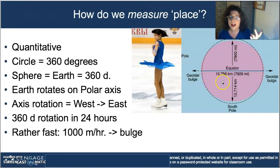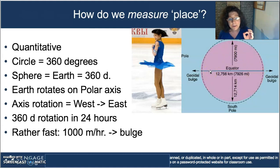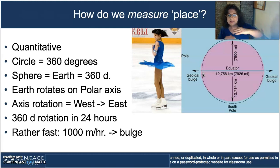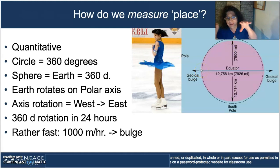The earth rotates around its polar axis — from north to south pole — completing 360 degrees in just 24 hours. That's about a thousand miles an hour at the equator. One reason the equator is bulgier and wider than the pole distance is similar to a skater's skirt: when she rotates quickly, her skirt flattens out, much like the earth's bulge at the equator.